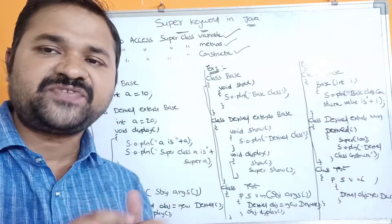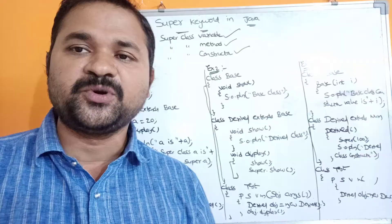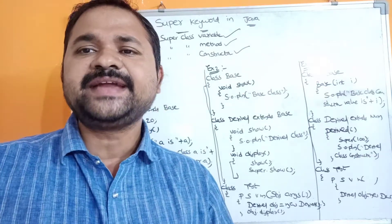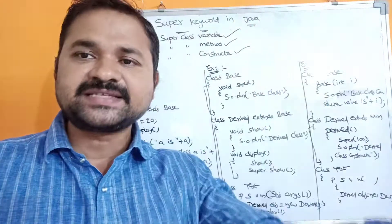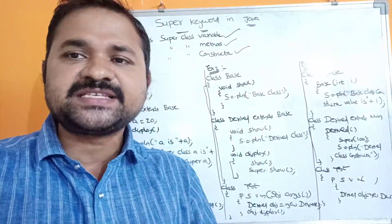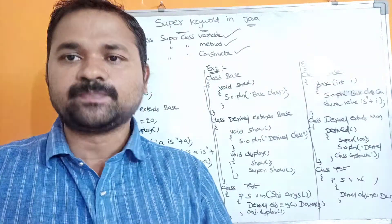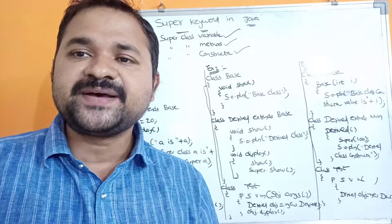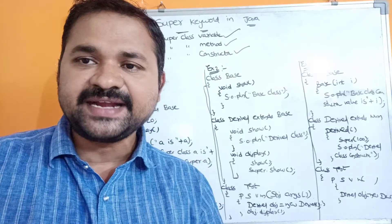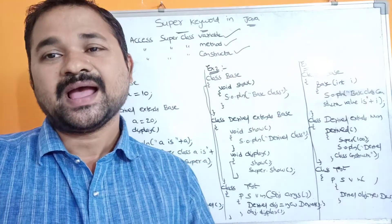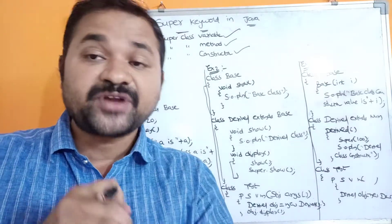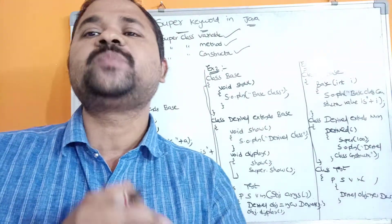Let's see the first one - accessing a super class variable. Let the base class and derived class contain the same variable. Then how can we access the super class variable from the subclass? For that purpose we use the super keyword. So if the base class and derived class contain the same variable, and we want to access the super class variable from the subclass, we use the super keyword.